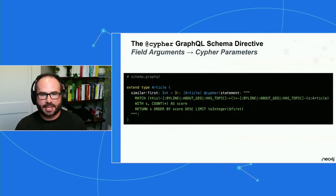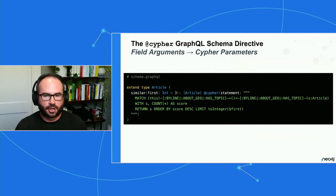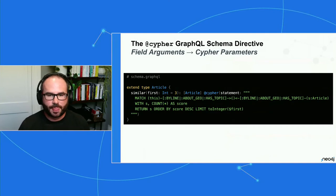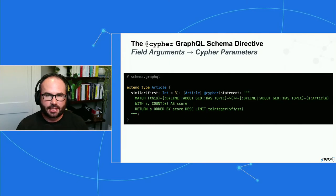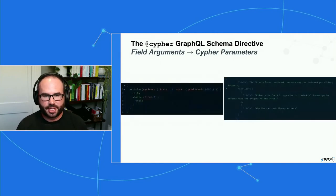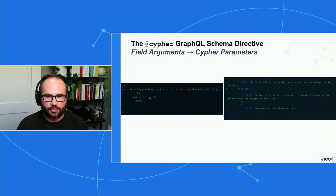Often it's useful to pass field arguments at query time. We can specify the number of similar articles to return — here we set a default value of three — and those field arguments are passed as Cypher parameters to the Cypher statement. So we can say 'only show me the first two recommended articles' and that's exactly what we get back.